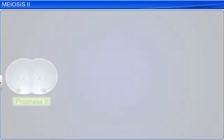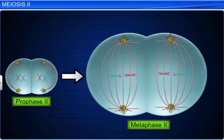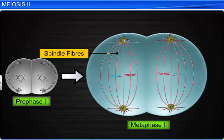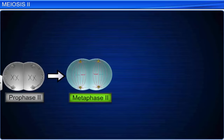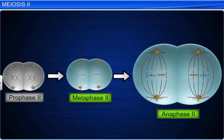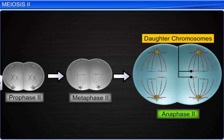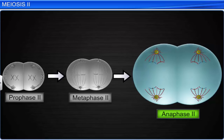Prophase 2 is followed by metaphase 2. During this phase, the chromosomes move towards the equator and align themselves along the equatorial plane. Bipolar spindles are formed and the microtubules from the opposite poles of each spindle attach themselves to the kinetochores of the sister chromatids. The next phase of meiosis 2 is anaphase 2. During early anaphase, the centromere of each chromosome divides longitudinally into two and splits the chromosome into two daughter chromosomes. These daughter chromosomes are then pulled to the opposite poles of the cell during the late anaphase stage.